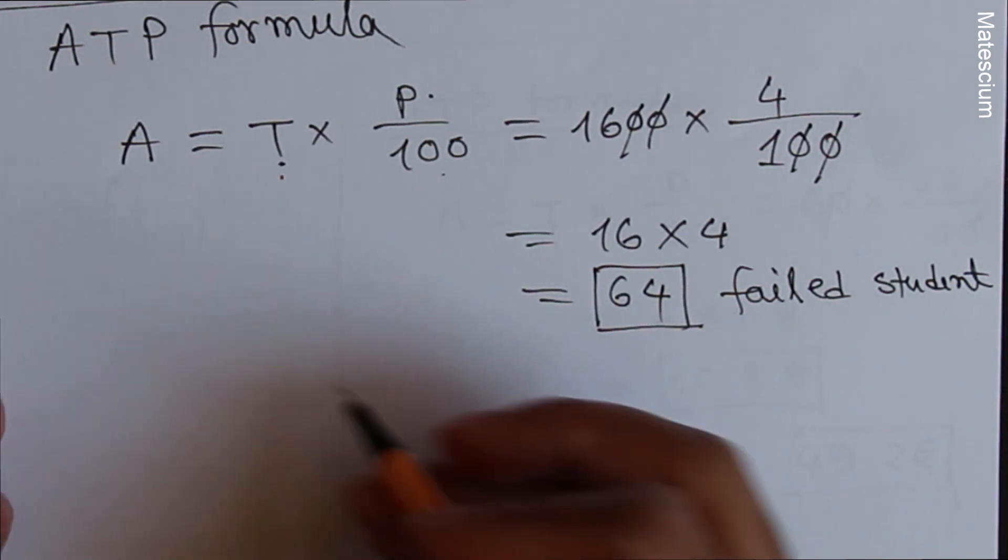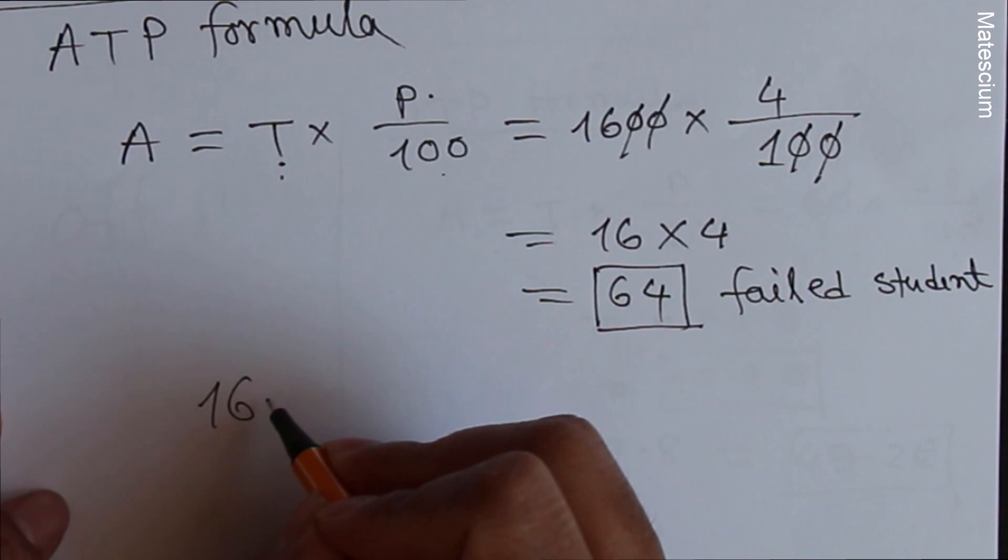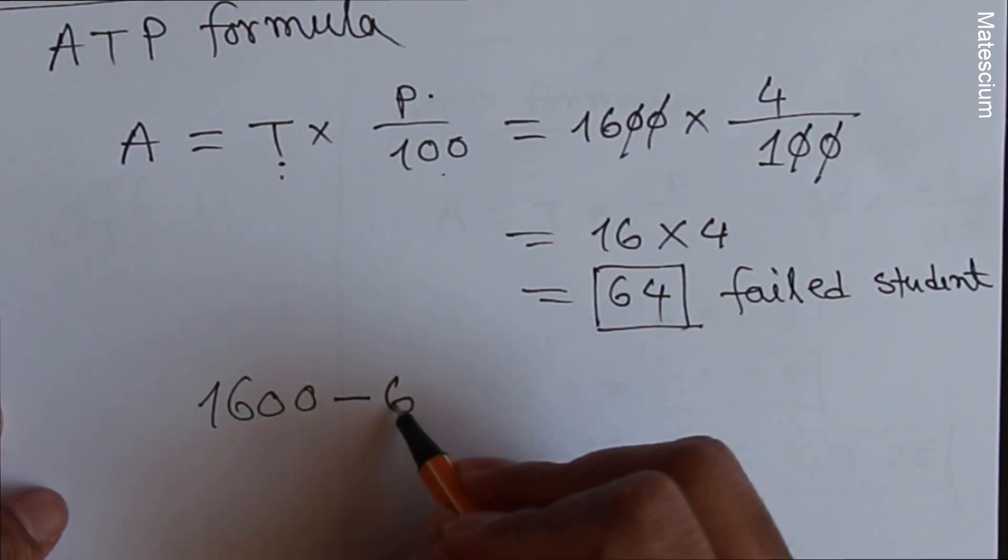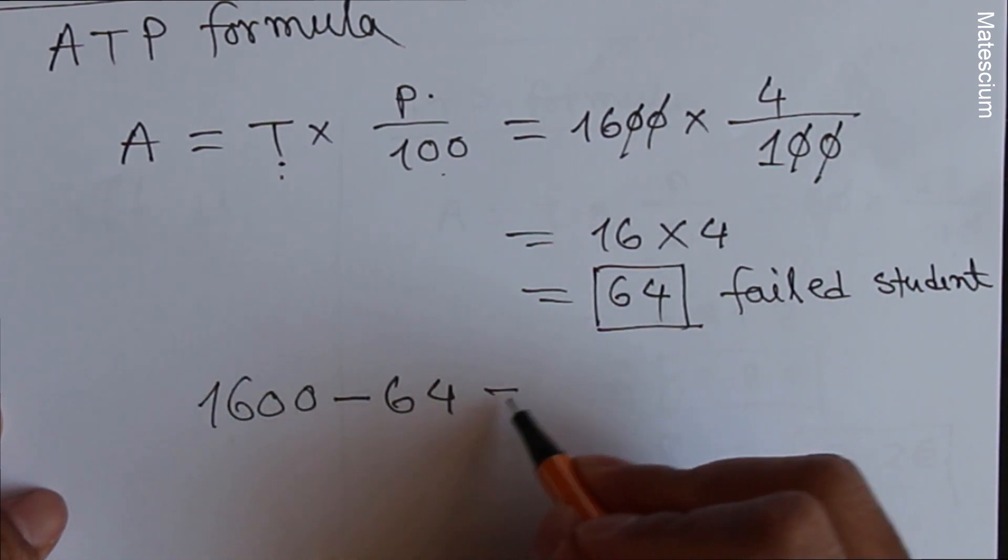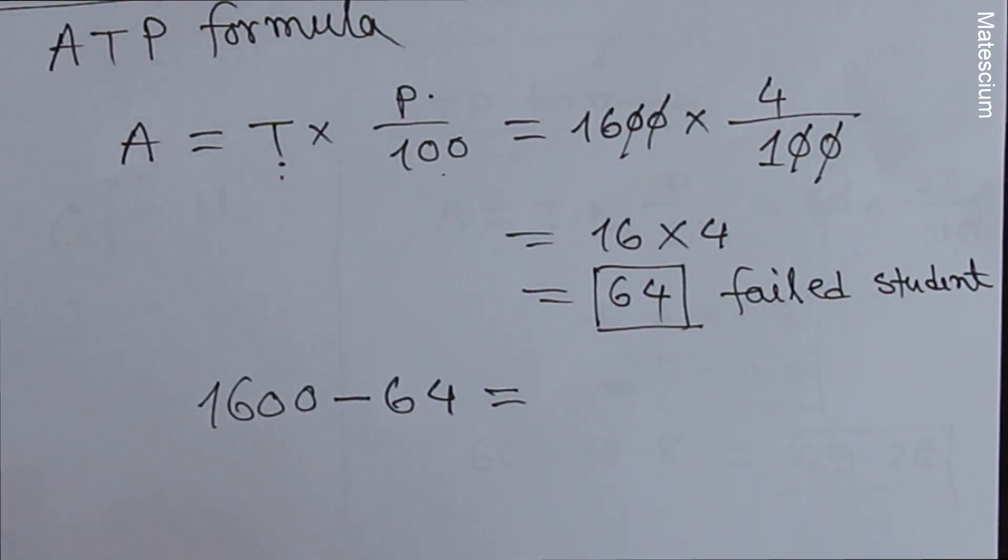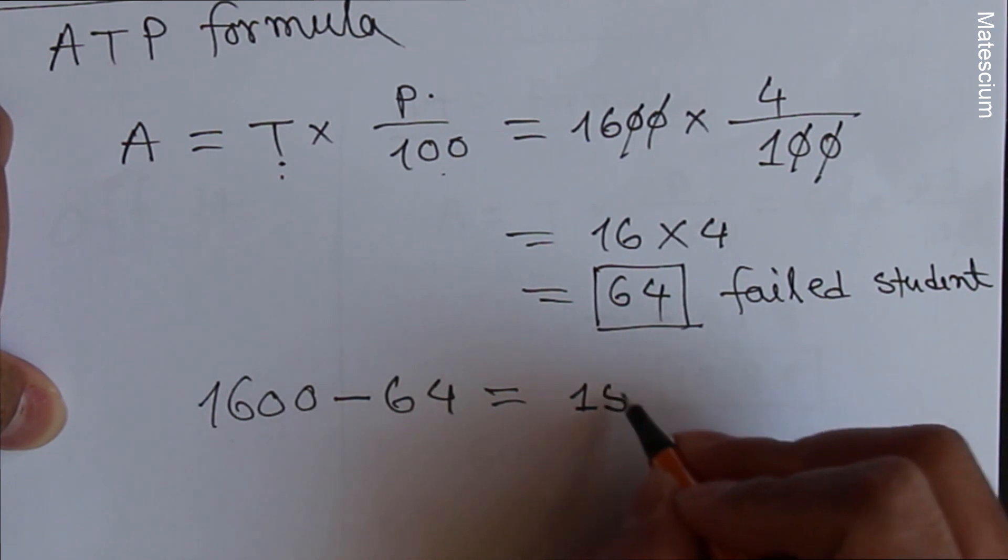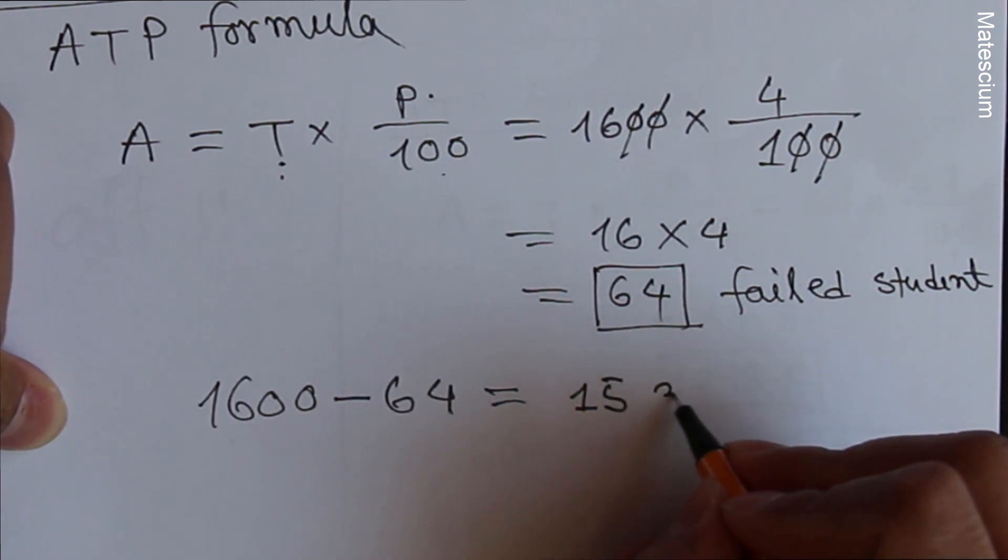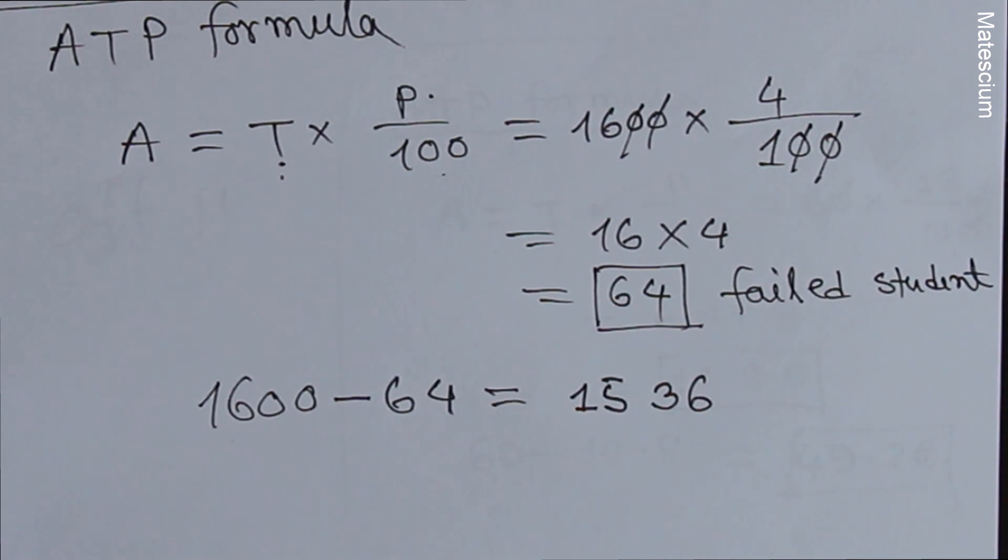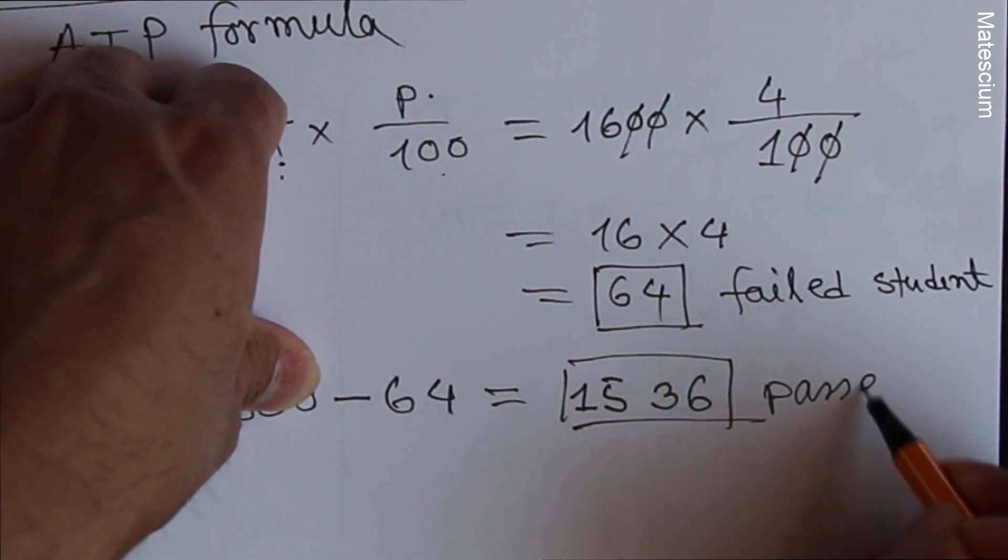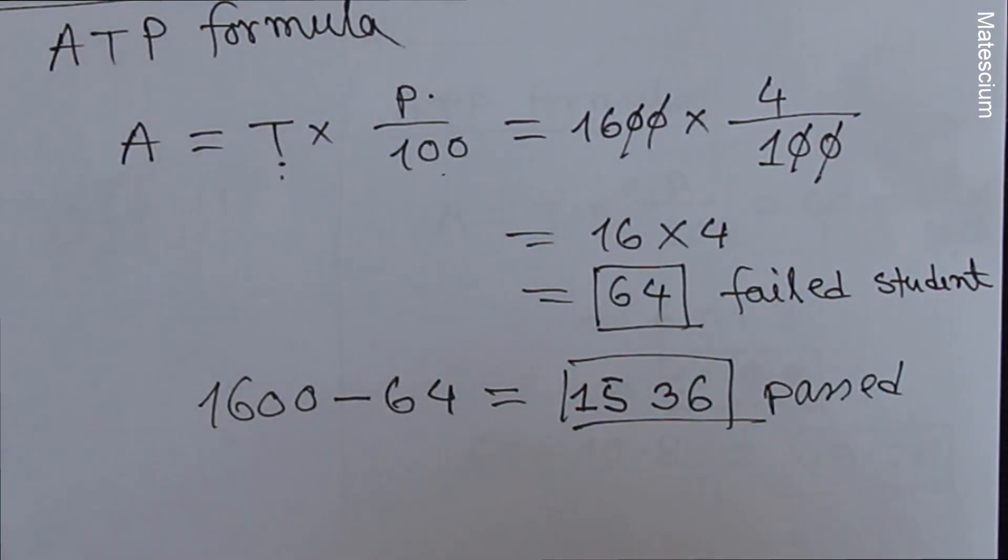How many students are passed? So 1600 are the total students and number of failed students is 64, right? So number of students that were passed in this school, that is 1536. Yes, this is the number. 1536 are passed and 64 students are failed.